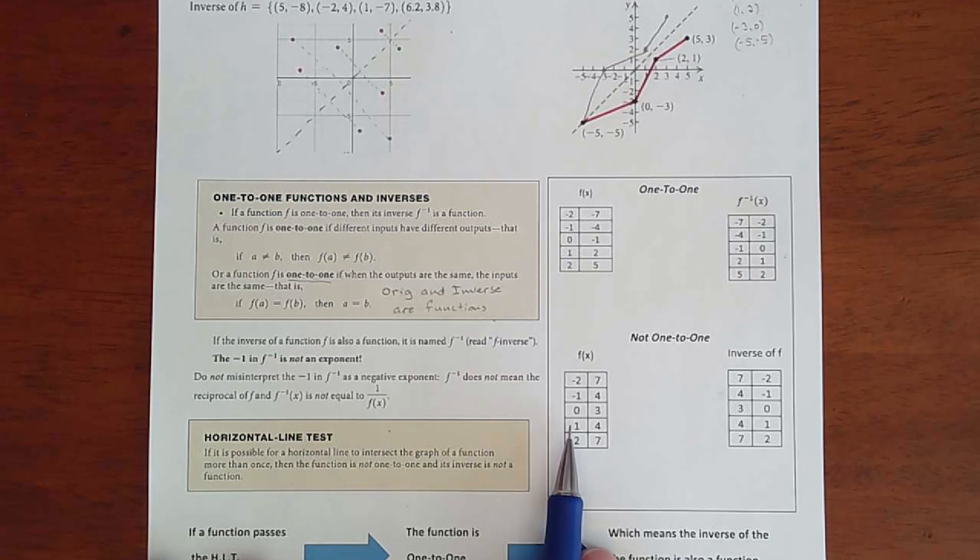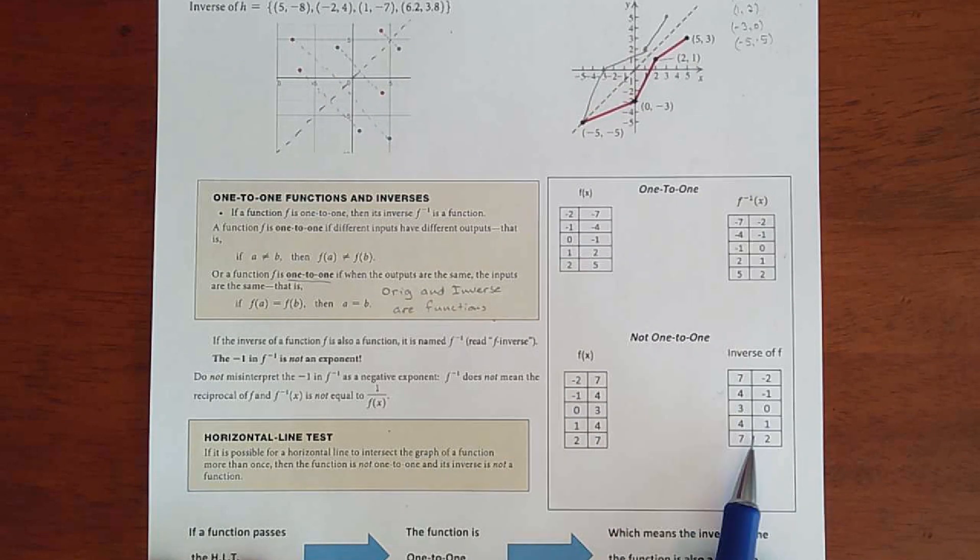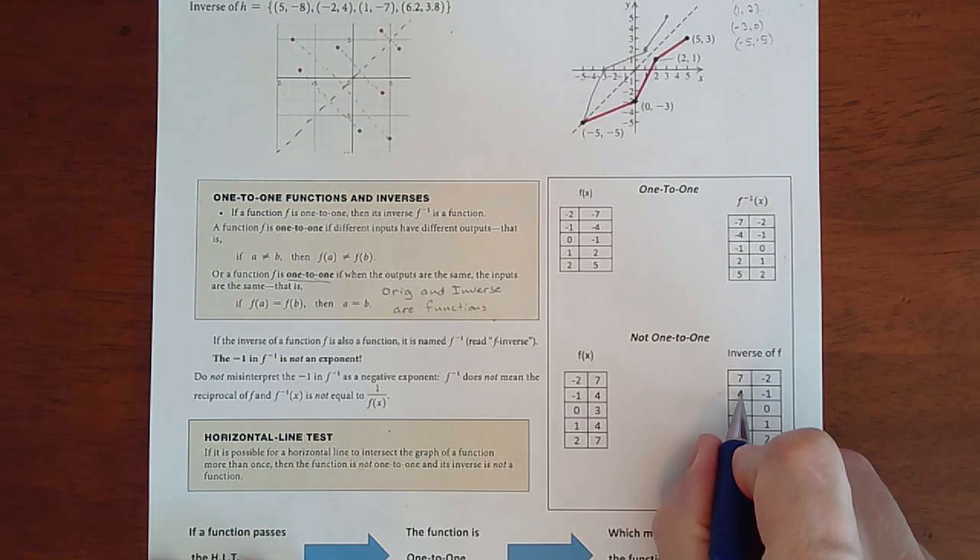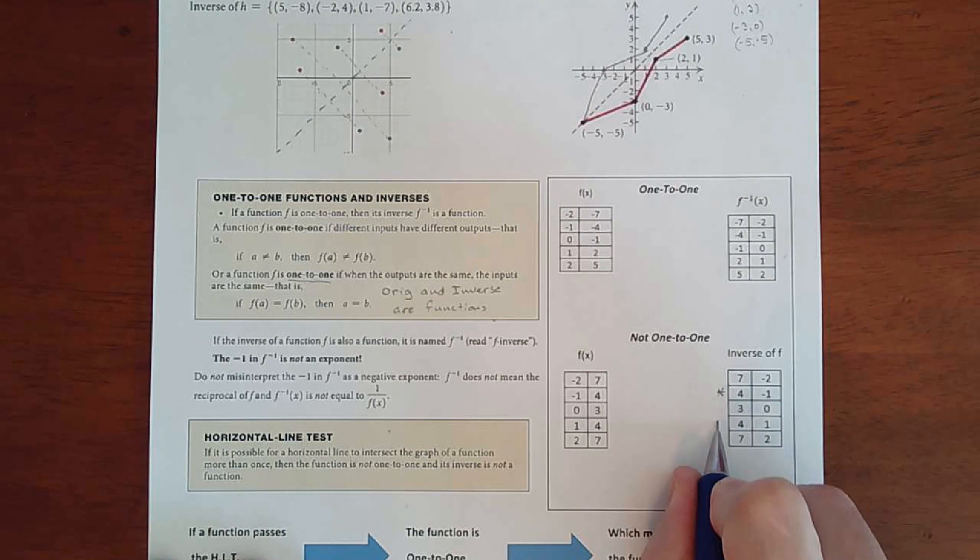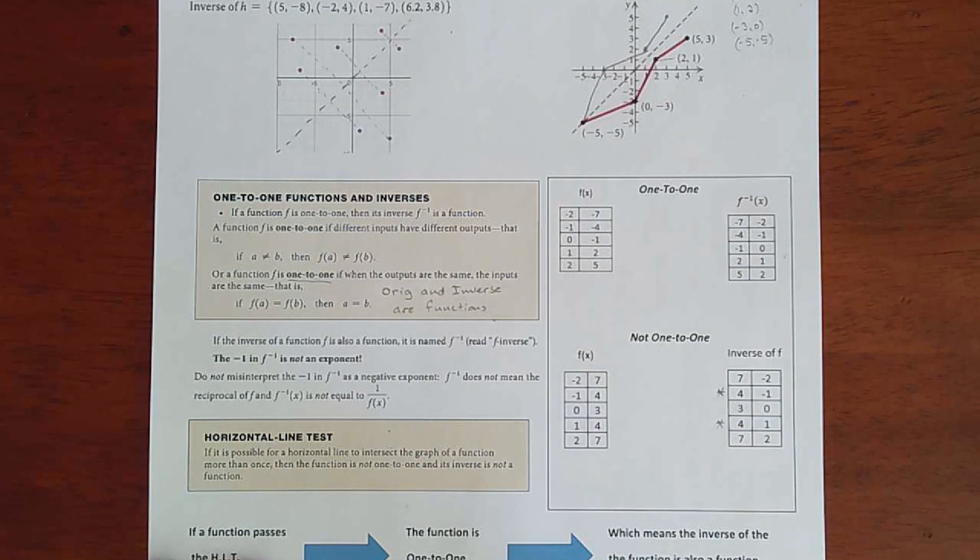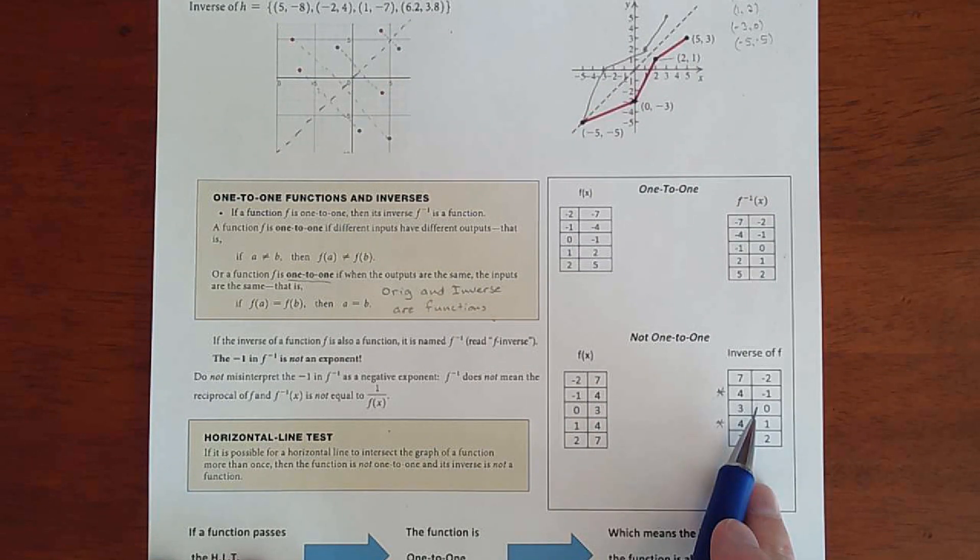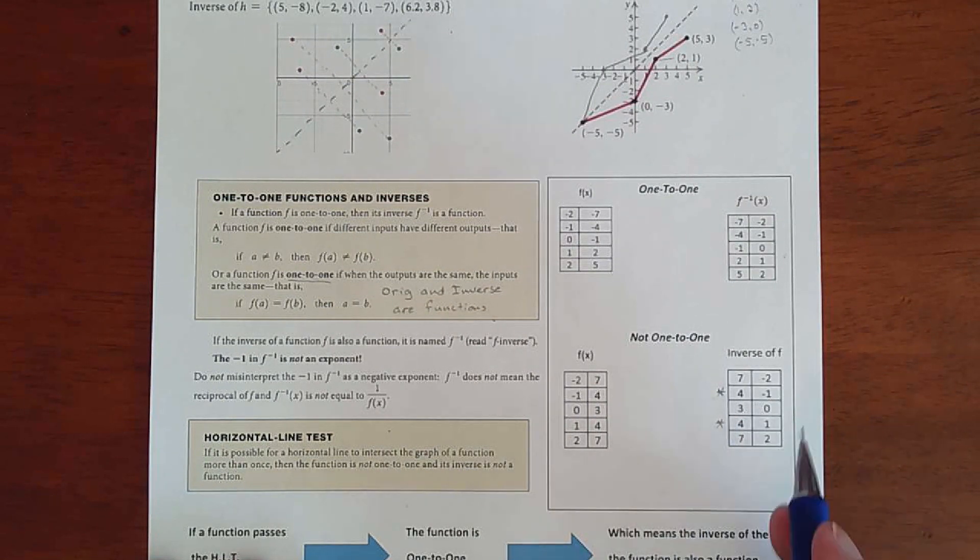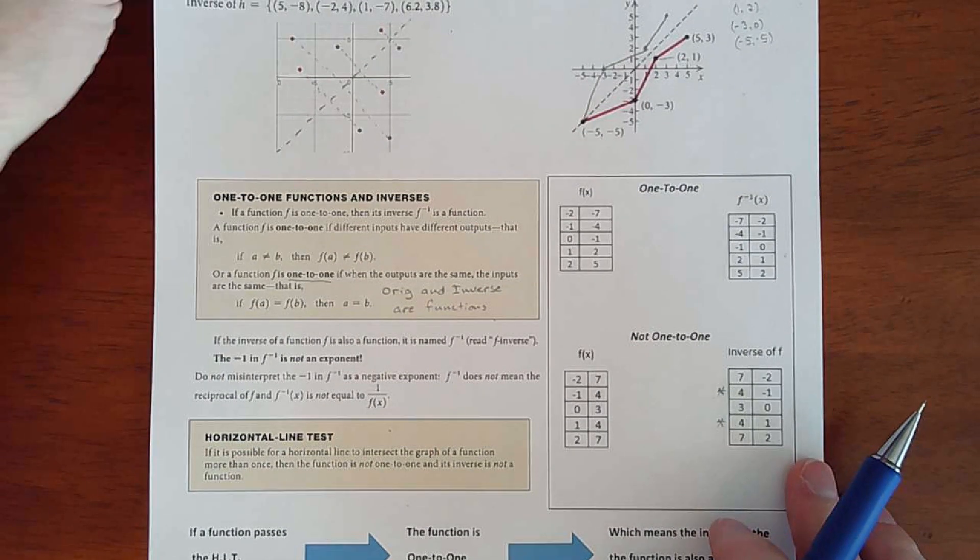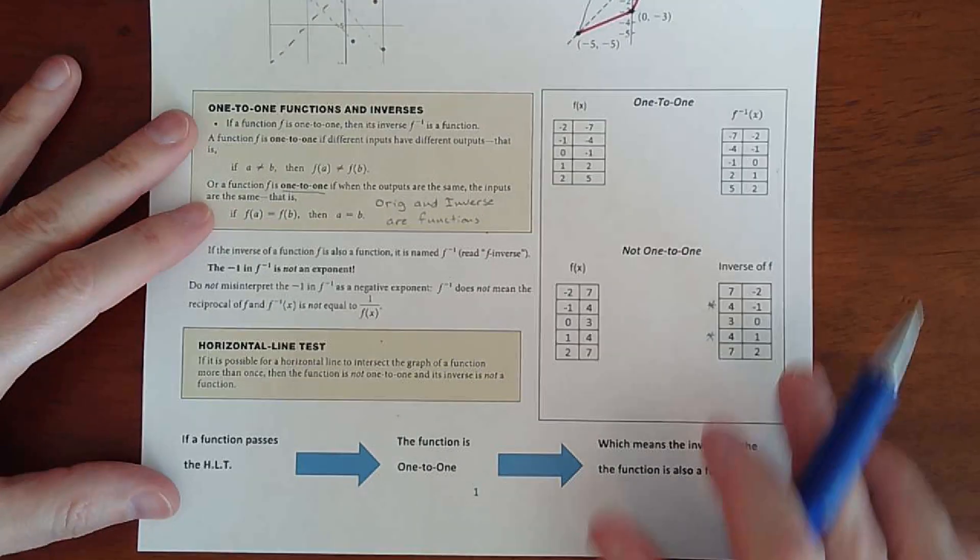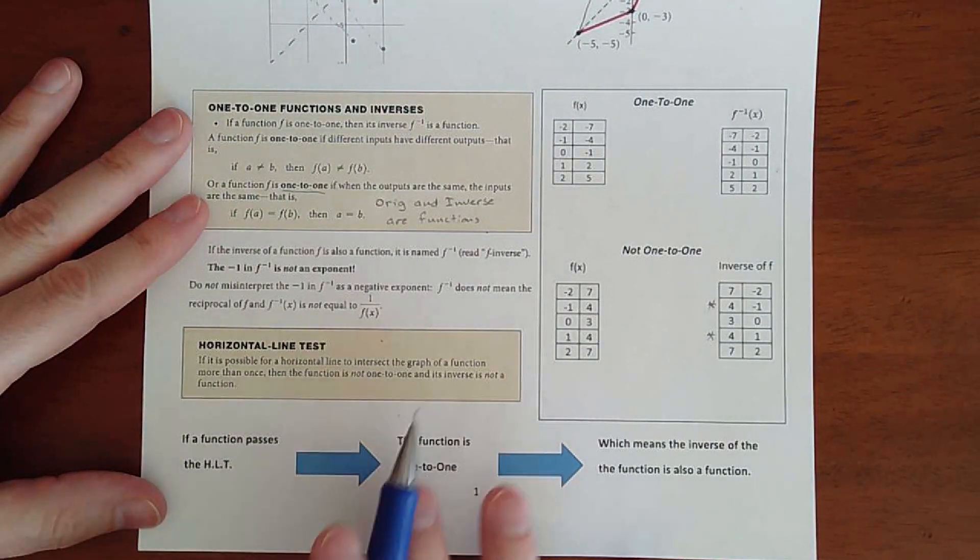You have negative 2, 7, you switch all these things around, and you have a 4 going to a negative 1 and you have a 4 going to a positive 1 - that's where your problem is. So the original is a function, but the inverse is not a function. Not that you can't find the inverse, it just doesn't pass the vertical line test, so it's not considered one-to-one.